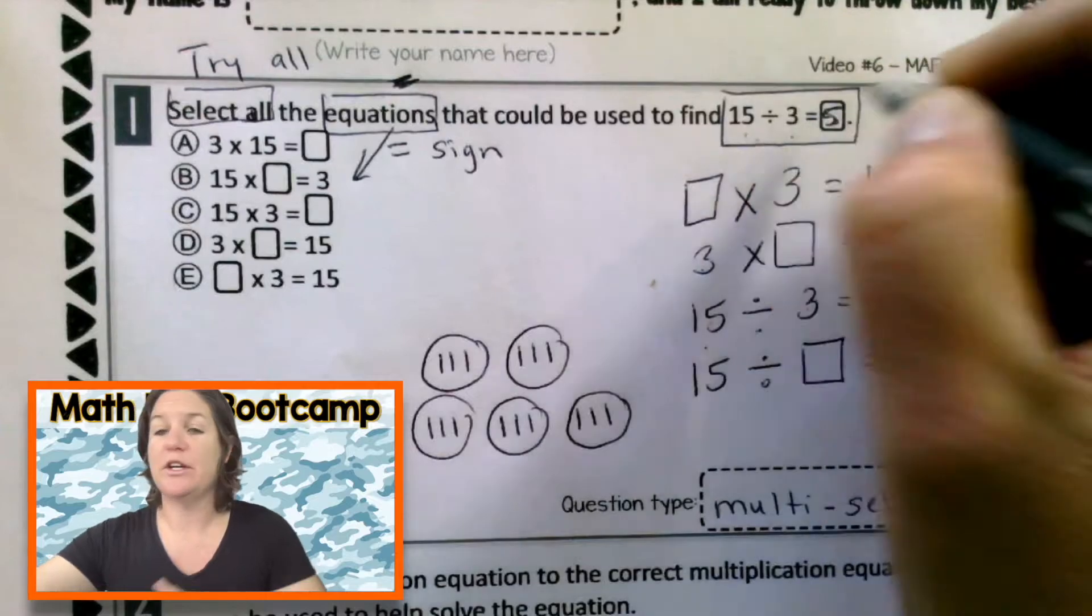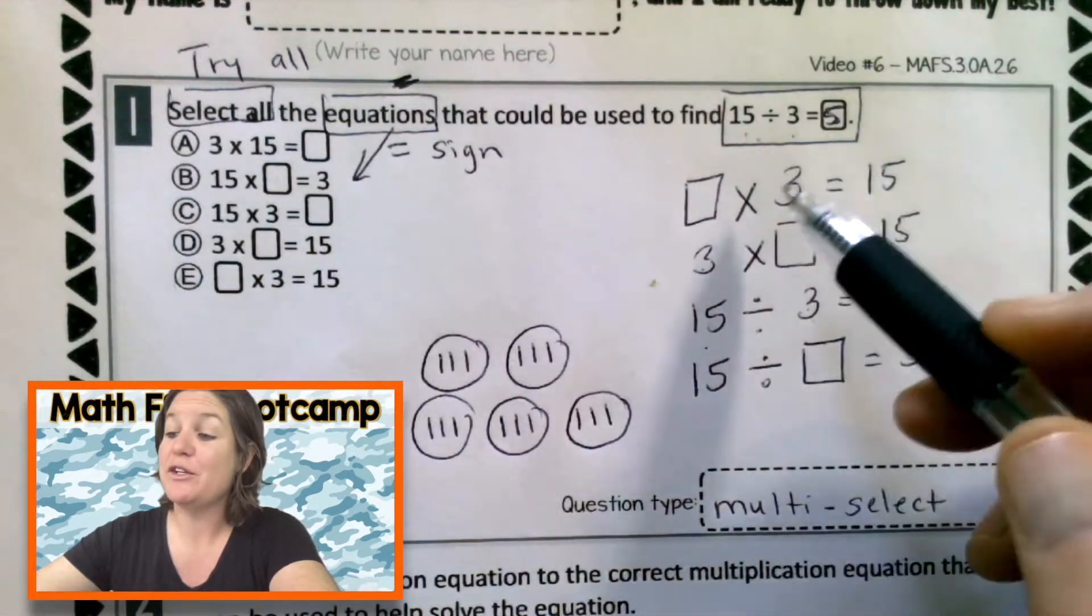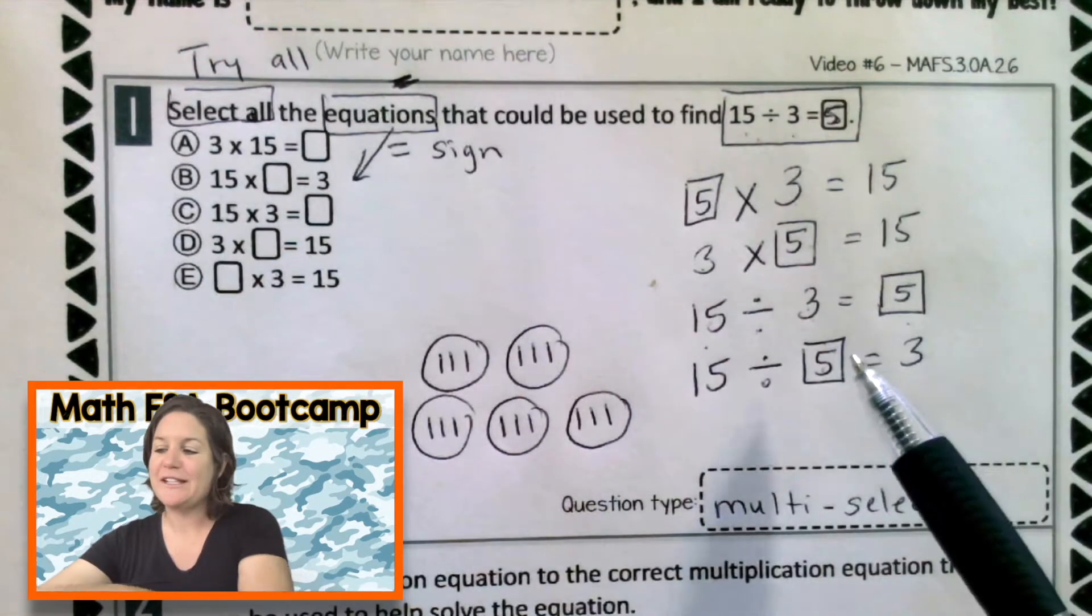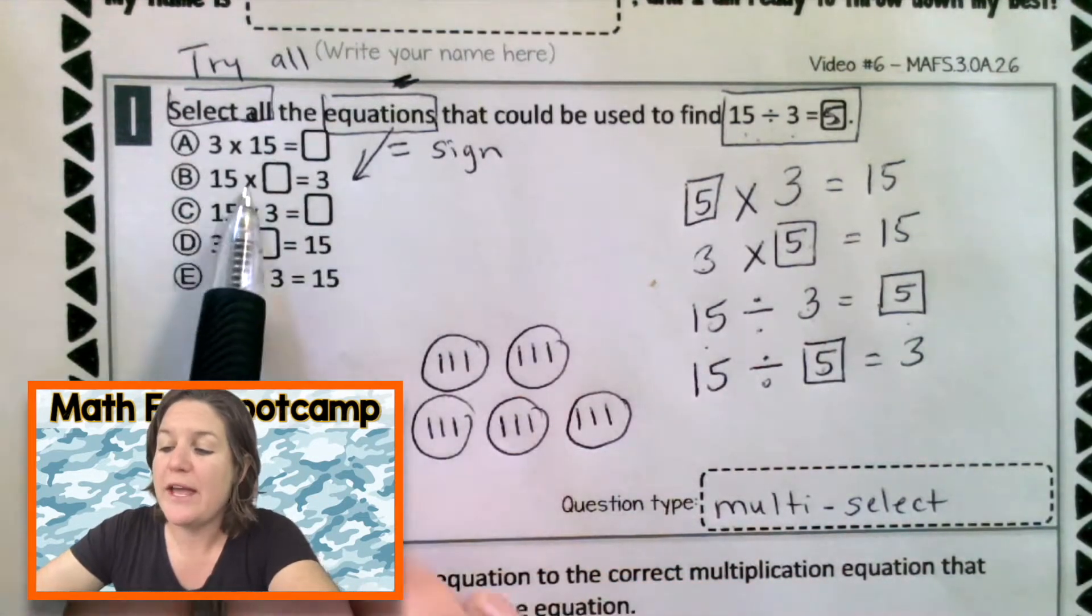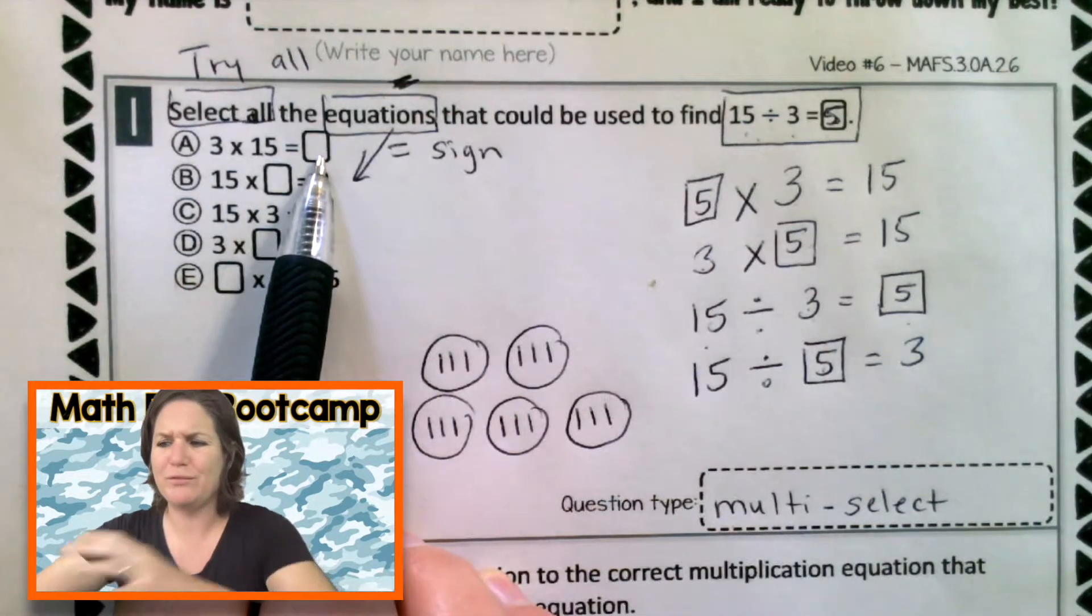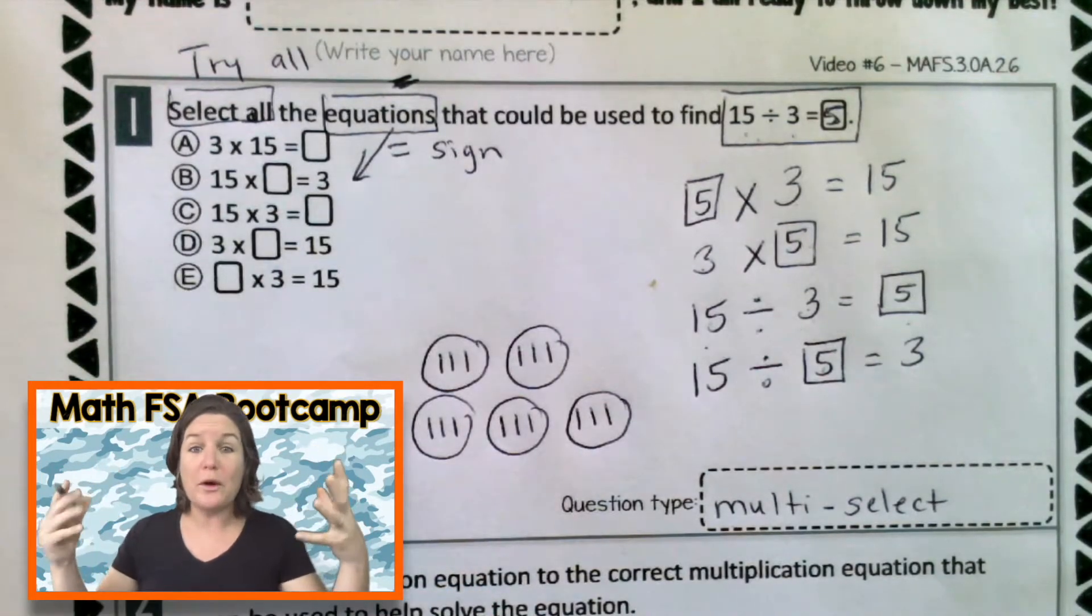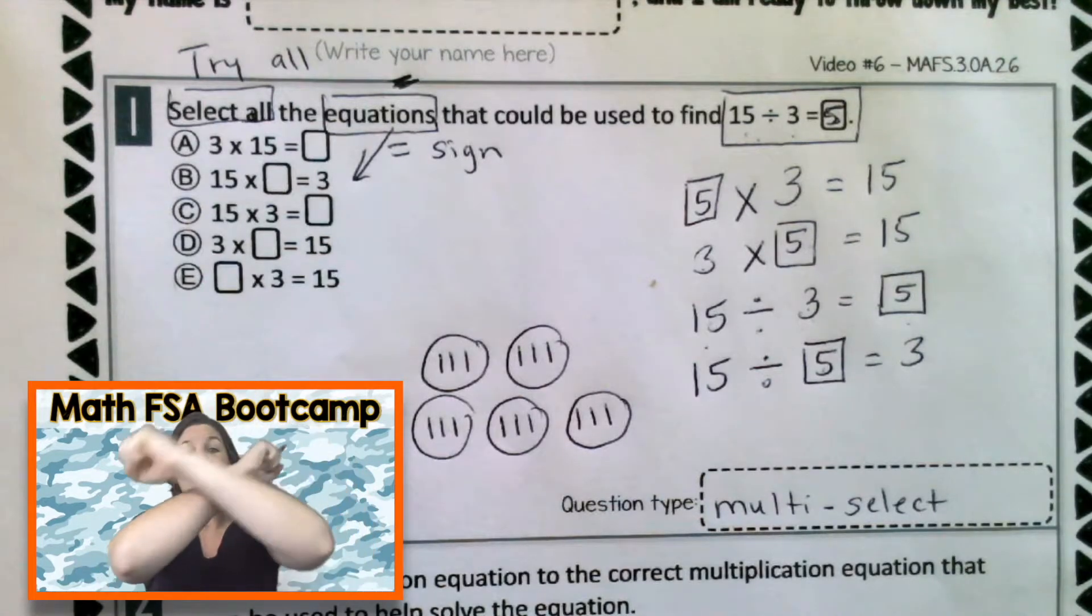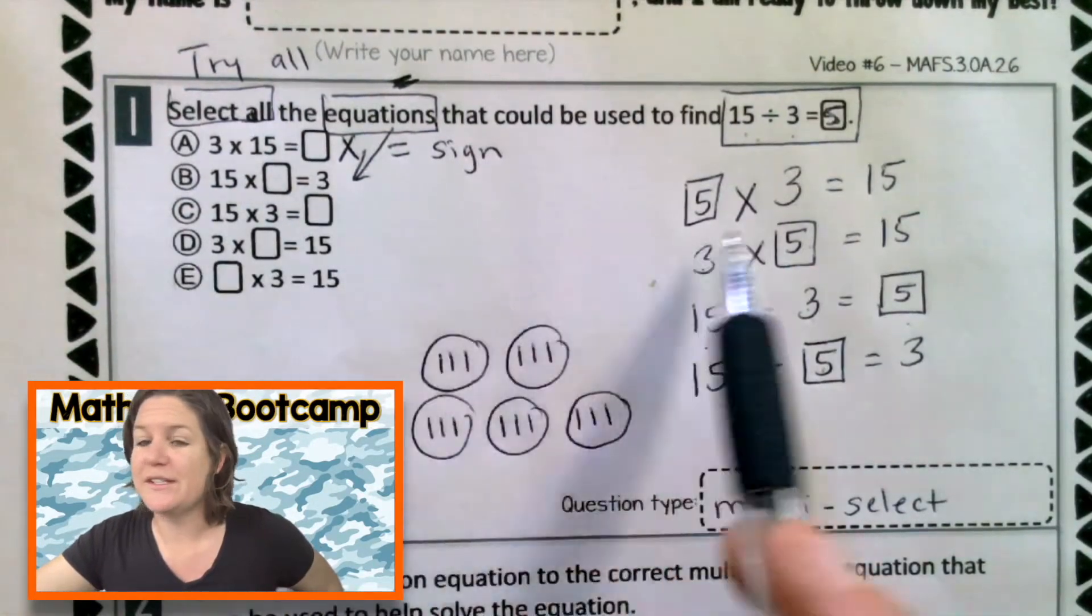So that means the missing value here would be 5. That means also that the missing value for all of our boxes would be 5. So now let's take our journey over to the answer choices and select which ones are correct. So A says 3 times 15 equals 5. Well, if we have 3 groups of 15 in each, that's going to be way more than 5. So what can we do with choice A? Right? We can eliminate. And also it's not over here.